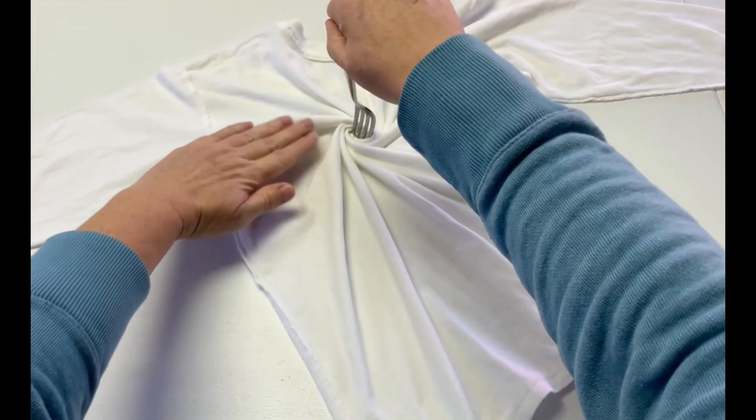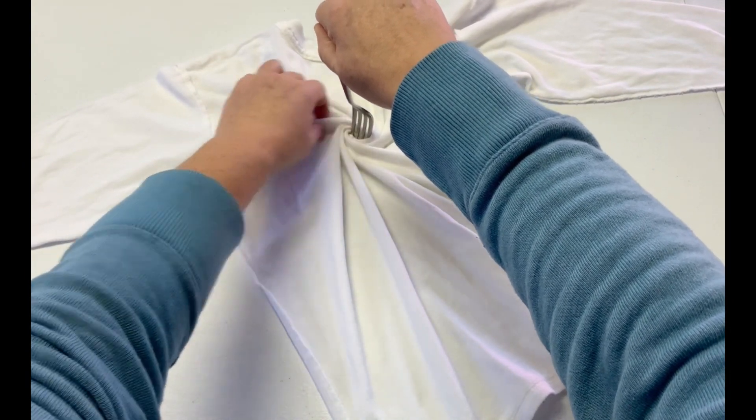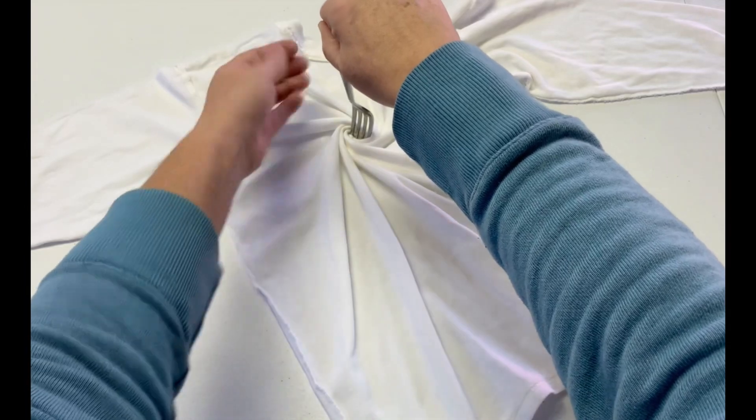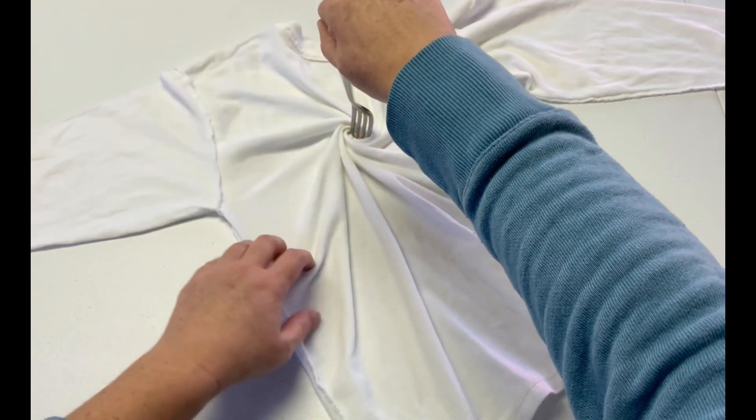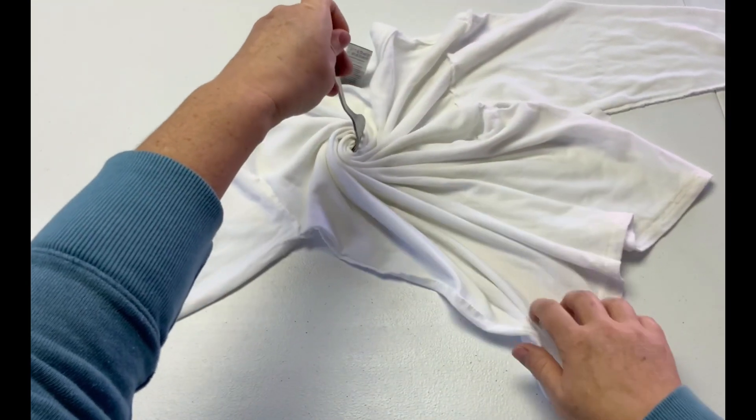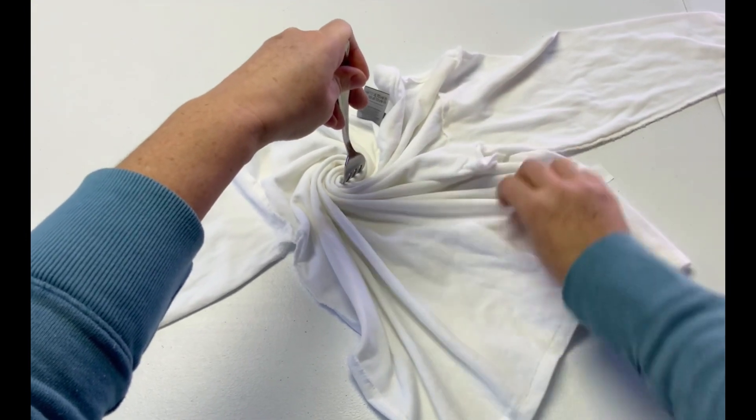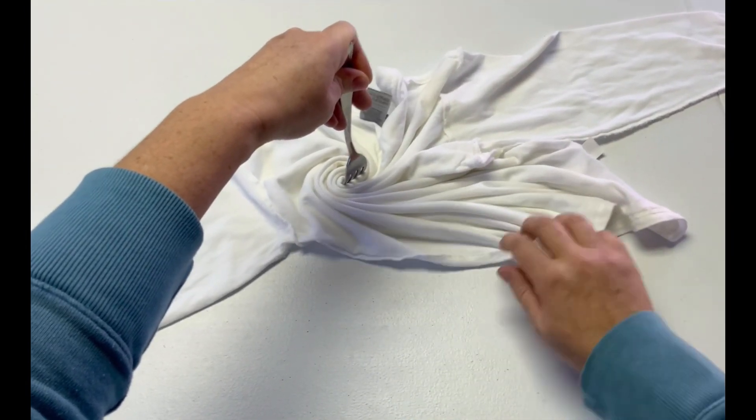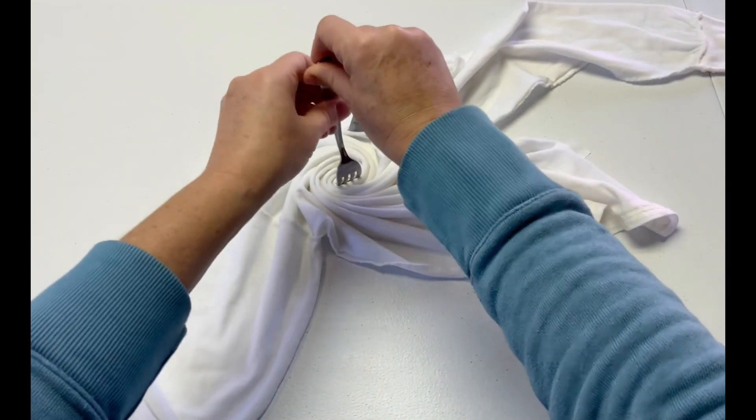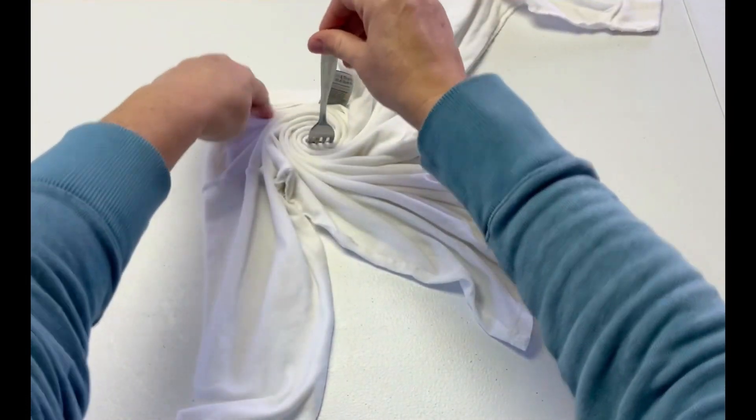As I begin the twist, I watch my pleats and I want to keep making more pleats because that's going to help give you that pattern as I twist. You want to try to keep all of the pleats as flat as possible so that each pleat has its own opportunity to be a color. If it's folding over the center of the spiral, then everything kind of gets muddy.